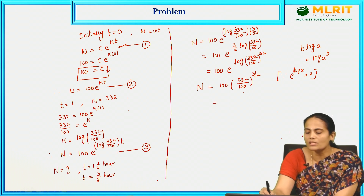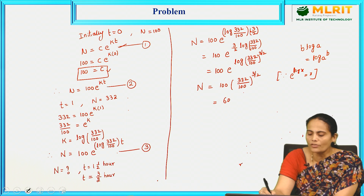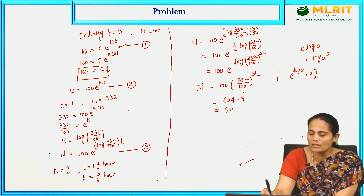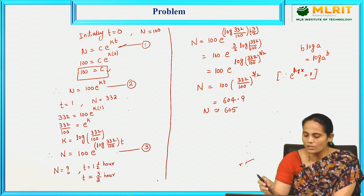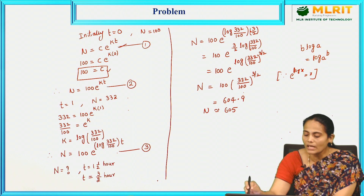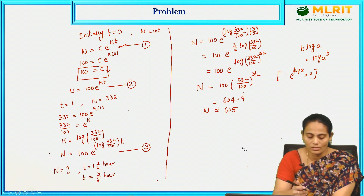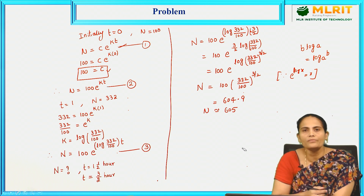This value is approximately 604.9, so N ≈ 605. The bacteria increased to 605 when the time is 3/2 hours.